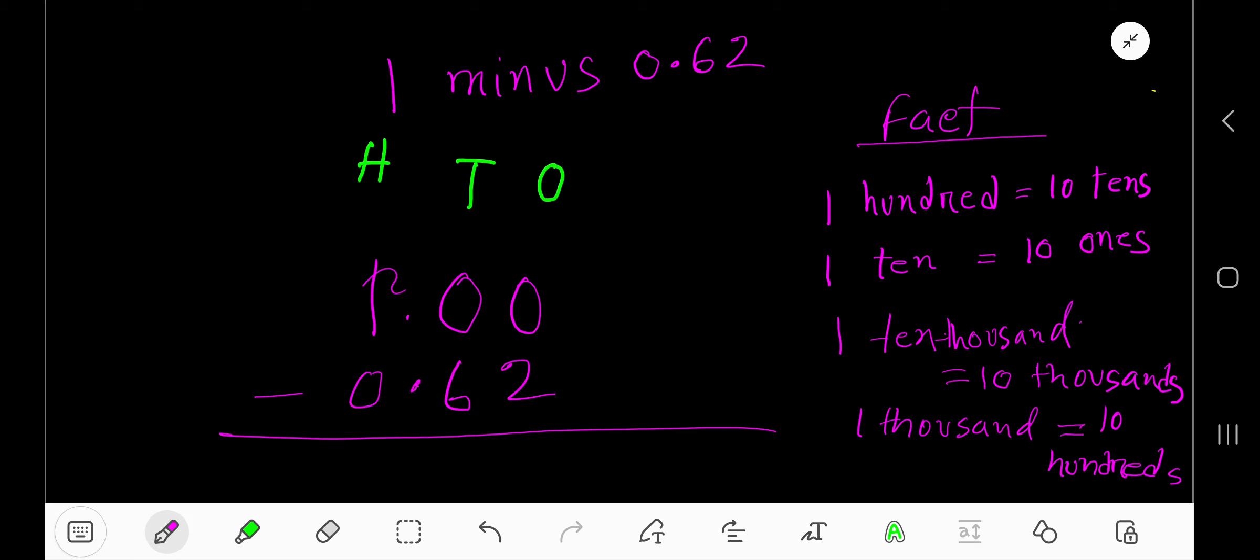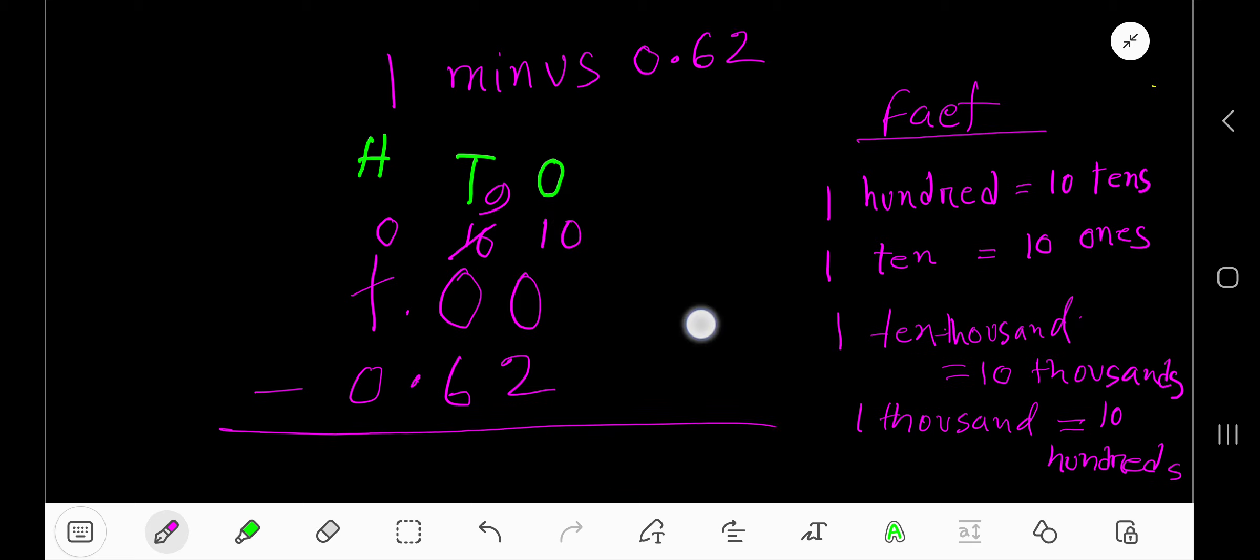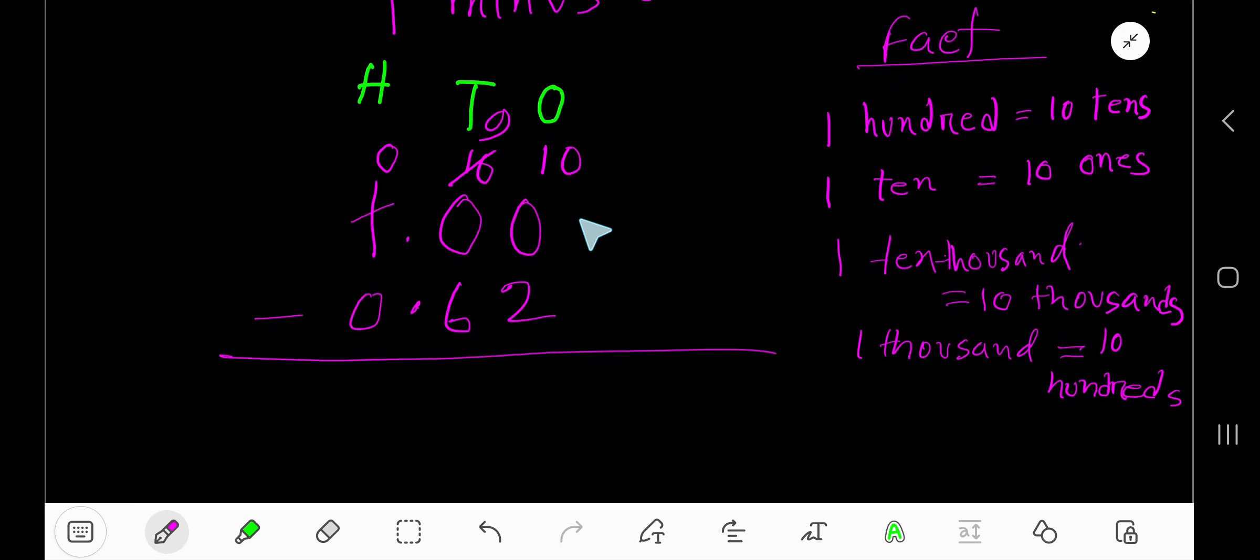column. If you borrow one hundred, then you will have zero hundreds. One hundred means ten tens. If you borrow one tens, then you will have nine tens, and one ten equals ten ones. Now take away